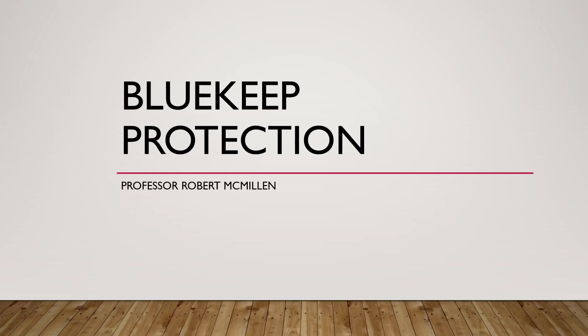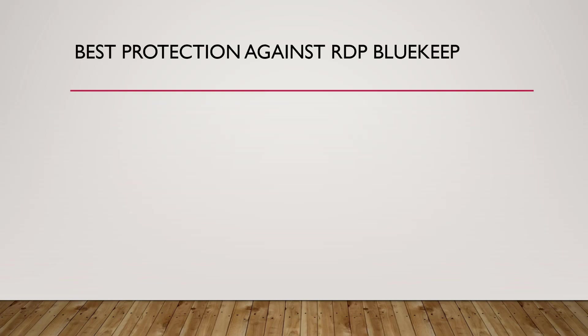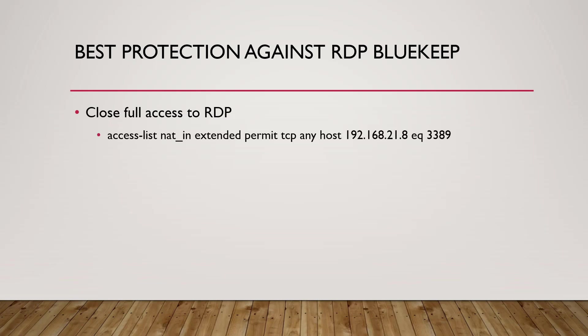Let's talk about some of the best ways we can protect ourselves against the BlueKeep vulnerability that attacks our terminal services using the remote desktop protocol. One of the best protections is to use the firewall to block access. Here you can see an access list where it says 'permit TCP any,' meaning anybody from the outside can come in and go after our server on port 3389, which is the default port for remote desktop services.